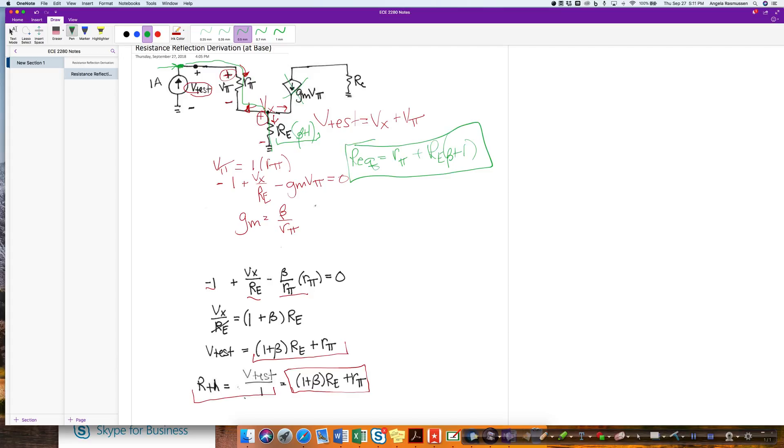The other thing I note here is that Rpi did not get any effect from this Gm Vpi dependent source. Therefore, Rpi is what we consider a base resistor. So whenever I do an effect, that would be considered to be at the base.